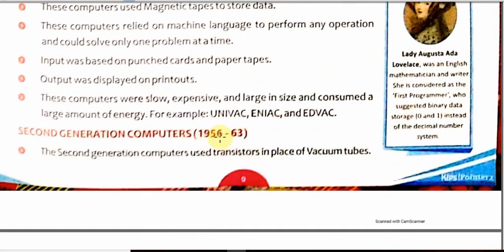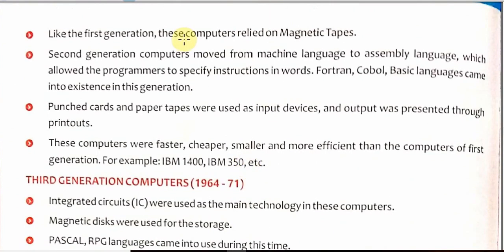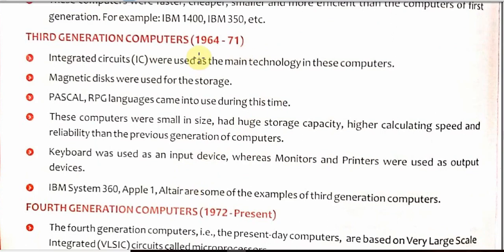Second generation computers ran from 1956 to 1963. They used small transistors in place of vacuum tubes. Since they used transistors, they consumed less electricity. They relied on magnetic tapes but were not using machine language — they used assembly language. In second generation computers, less electricity was utilized, they used transistors, and punch cards and paper tapes were used as input devices while output was printed. They were faster, cheaper, smaller and more efficient than first generation computers.